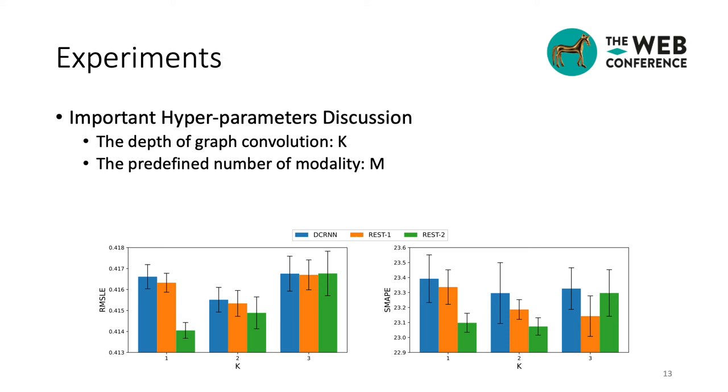Secondly, let's focus on the predefined number of modality. As we can see, both under single modality, REST1 performed much better than DCRNN with various K, which indicates that the EINs can effectively re-quantify the weight of edge labels. Moreover, when M is equal to 2, the REST2 outperforms much better, which indicates that it's necessary to use higher dimension vectors to describe the features of edges.